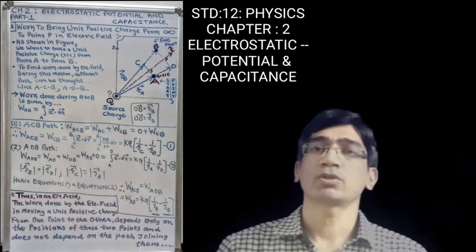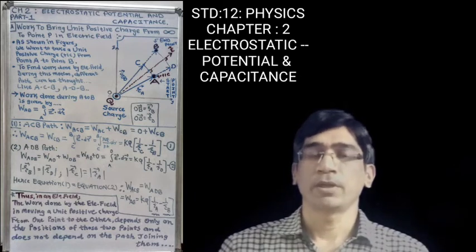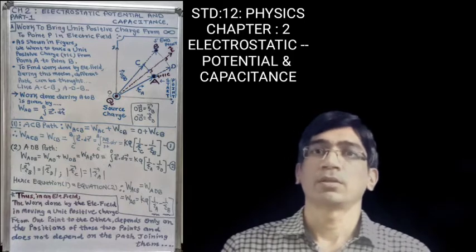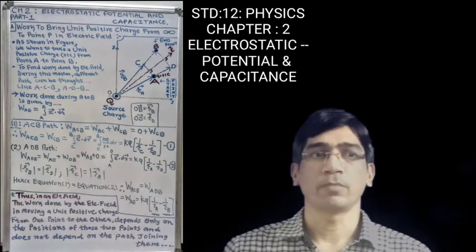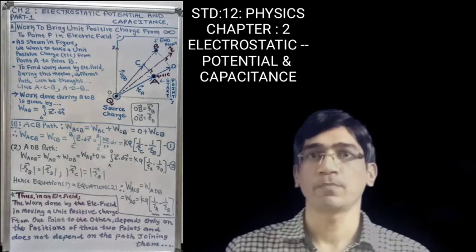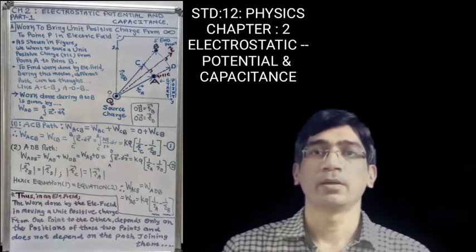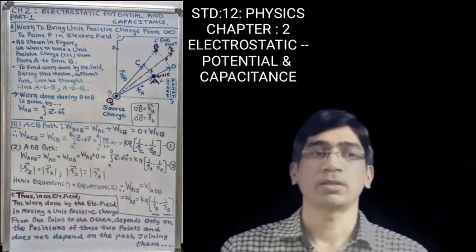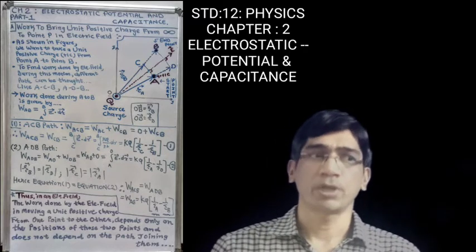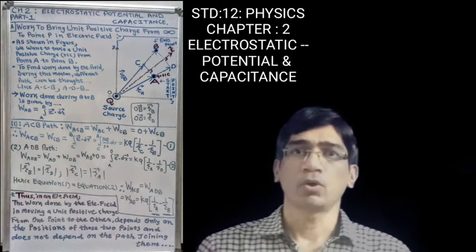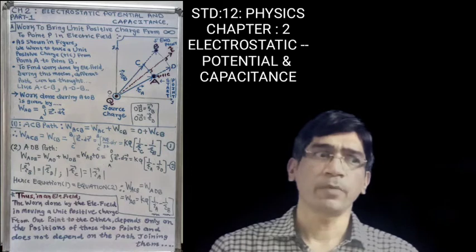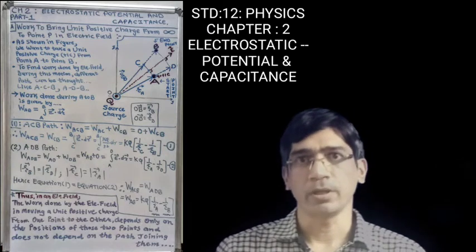In this figure, we are taking the source charge capital Q and we bring the unique positive charge from the infinite point to the A point. Now, we are putting this unique positive charge from A to B position. So we choose two different paths: A to C and C to B, that is the ACB path, and another path A to D and D to B, that is the ADB path. We want to take a unique positive charge plus 1 coulomb from point A to point B, and to find the work done by the electric field during this motion, different paths can be chosen — ACB and ADB.